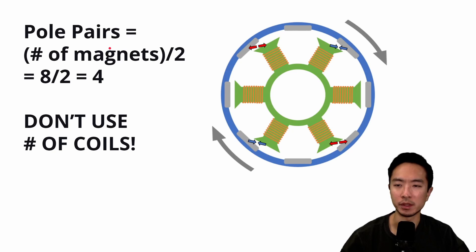To find the pole pairs is pretty easy. You take the number of magnets and you divide it by two. So in this case, we have eight divided by two, which is four. So we have four pole pairs. One thing to note is that the magnets are the things on the side. The coils are the ones that have the wires turned in circles several times.